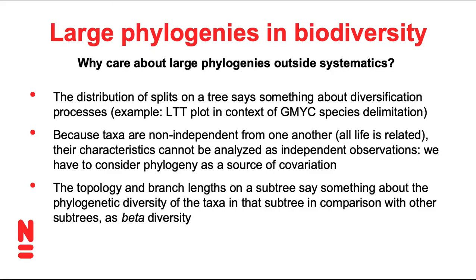We'll look more at this kind of analysis in later lectures. Also, we have gone at length over the issue of taxa not being independent from one another, because all life is related, so that in comparative analysis we cannot simply compare species without taking phylogeny into consideration as a source of co-variation among taxa. Finally, we can also use very large phylogenies as an indicator of phylogenetic diversity — comparing different points in space or time, for example through seasons or before and after a major event, to assess which parts of the tree are more or less represented as a kind of indicator of beta diversity.